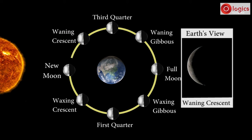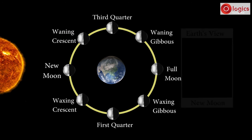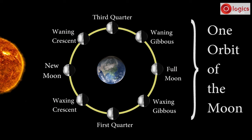After this, Moon reaches to its initial position again, which is New Moon. Here one orbit of Moon is completed, which takes almost one month.